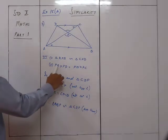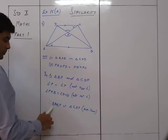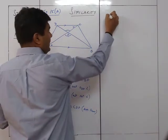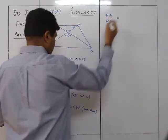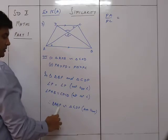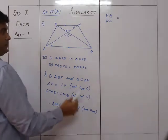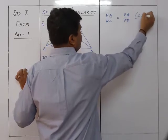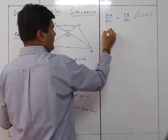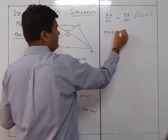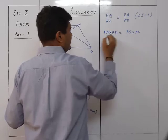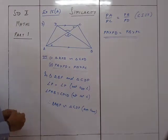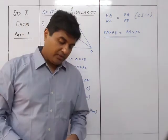From the similarity of triangles ABP and CDP by CSST: PA/PC = PB/PD. Cross multiplying, we get PA × PD = PB × PC. Hence proved. That was sum number 3.